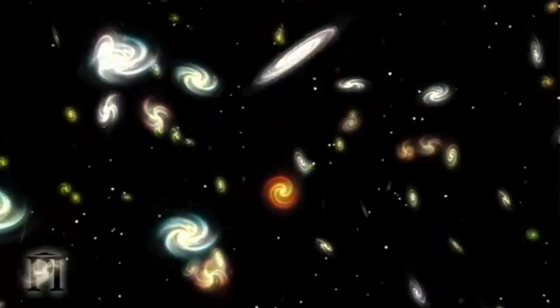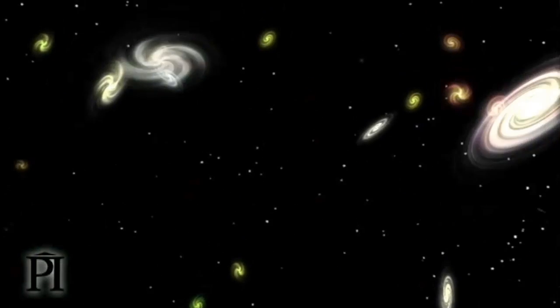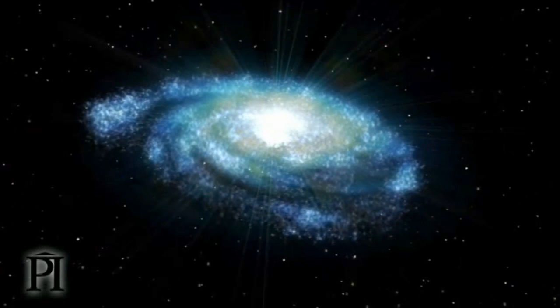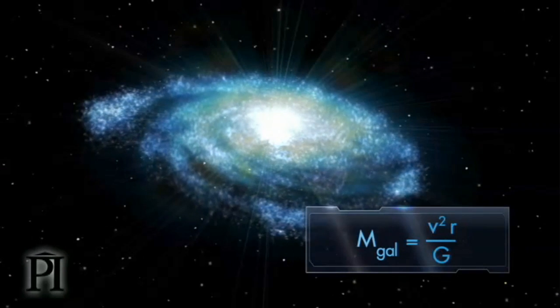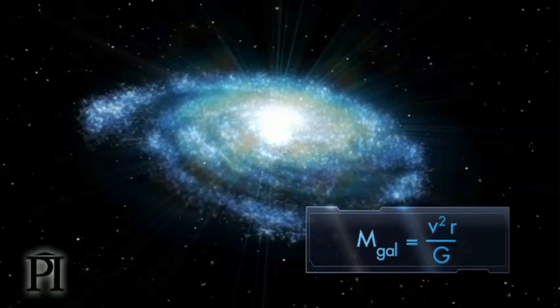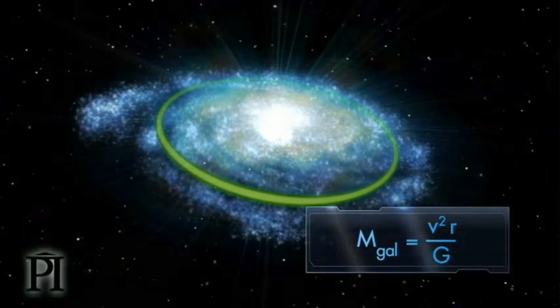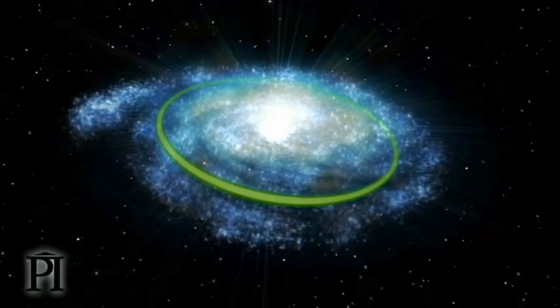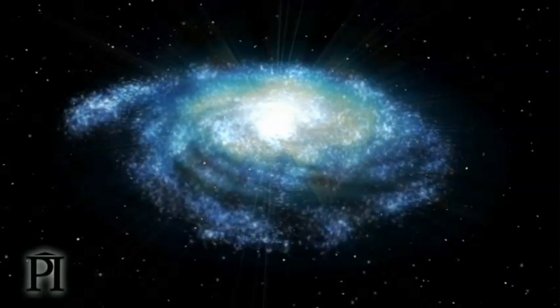In many galaxies, gravity makes stars orbit the centre of their galaxy, just like Jupiter orbits the Sun. Because of this, we can use the orbital method to find the mass of a galaxy within the radius of the orbit of any star we choose. To do this, we need to know the speed of the star and the radius of its orbit.